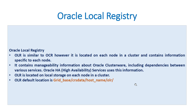OLR (Oracle Local Registry) is located on each node in a cluster and contains information only specific to that particular node — it does not contain information about other nodes. It contains manageable information about clusterware and dependencies between various services. Oracle HA services uses this information when it tries to start up or manage the cluster. If you have lost the OLR, your cluster will not come up online. OLR is on local storage on each node; the default location is grid-base/CRS/data/hostname/OLR.